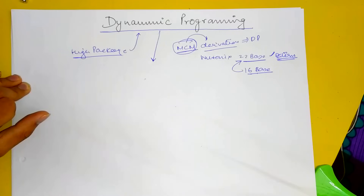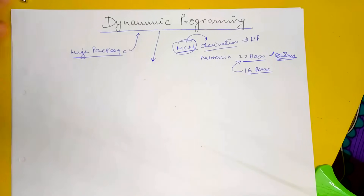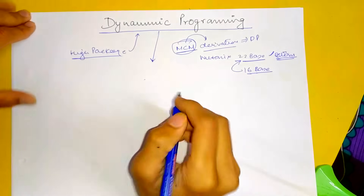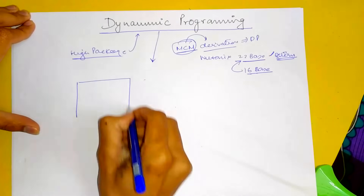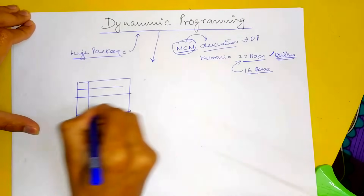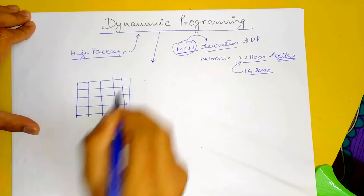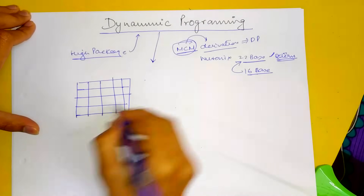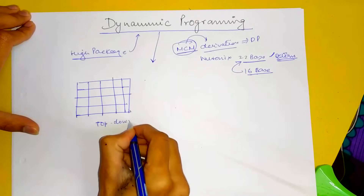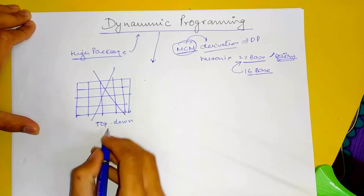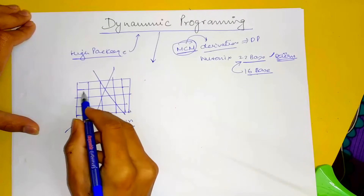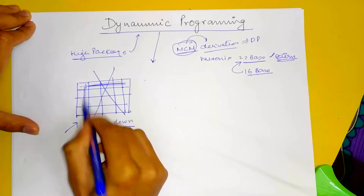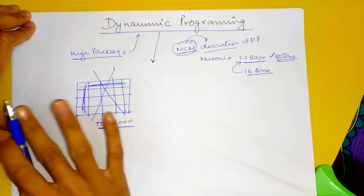First of all, let's see how to identify whether any given question is a dynamic programming problem or not — how to identify them. This is a top-down approach. It is not direct like a table with initialization, rows filled with zeros, and a formula — that alone is not dynamic programming.